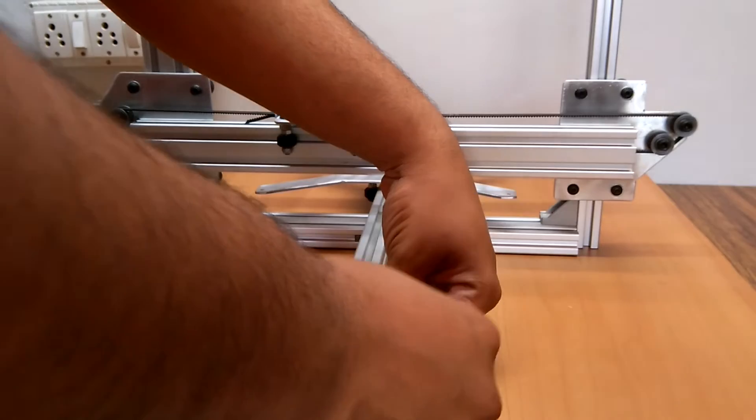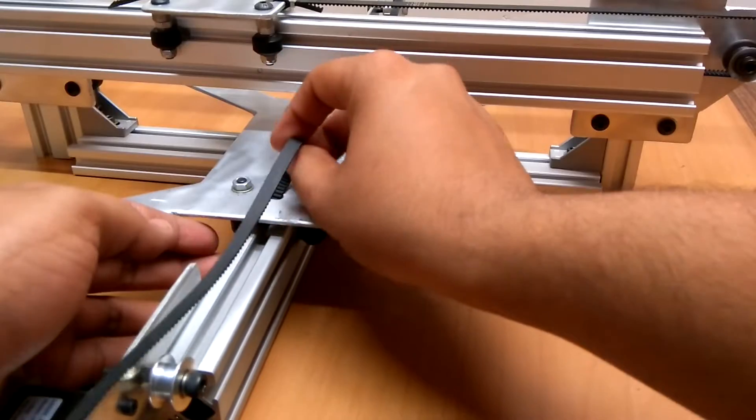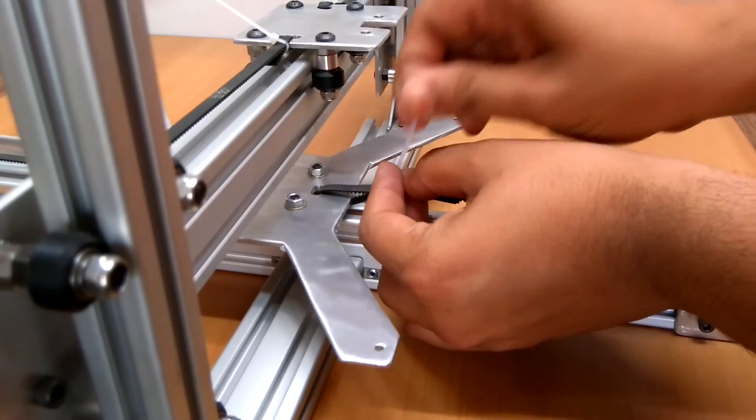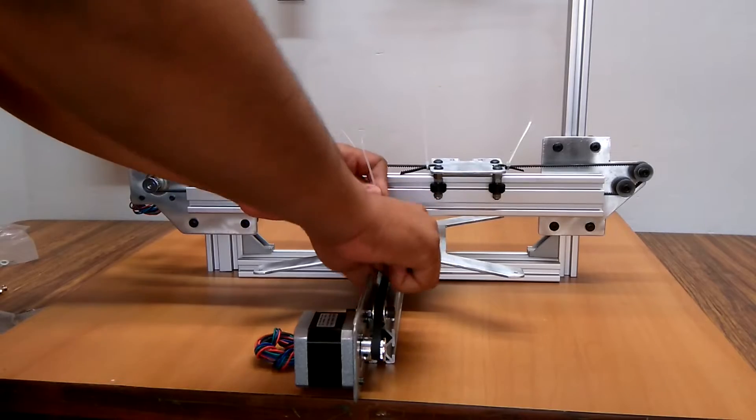I did the same procedure for the y-axis belt, fastened the belt with zip ties, made sure that the belt goes through all the pulleys smoothly and cut all the excess cable ties.